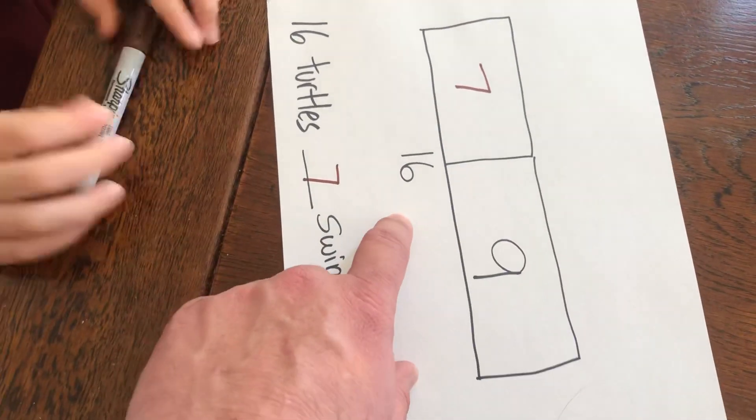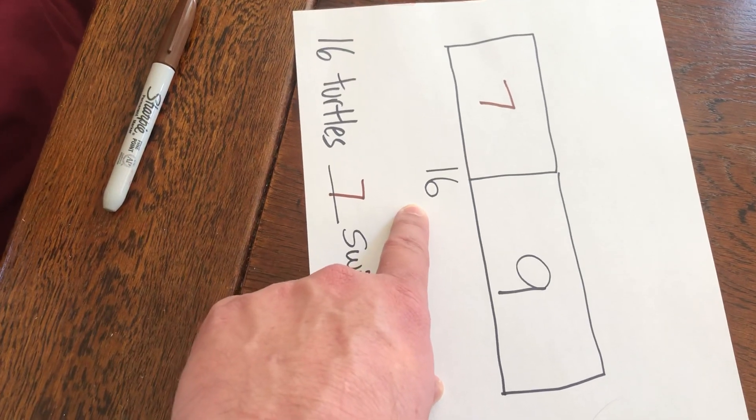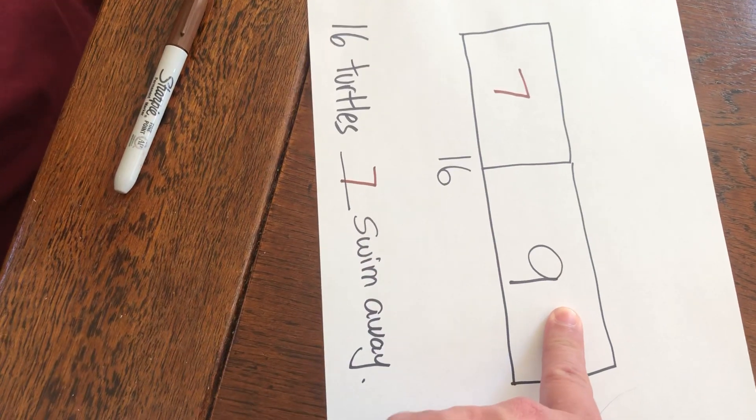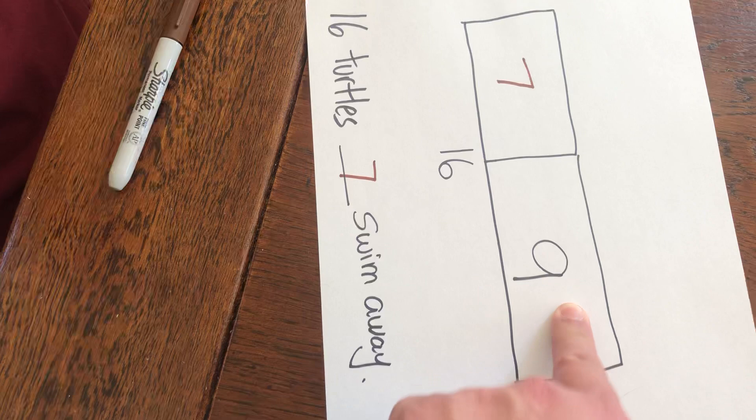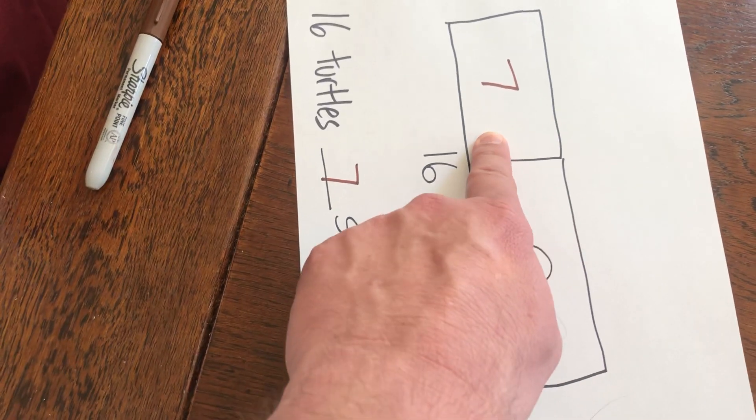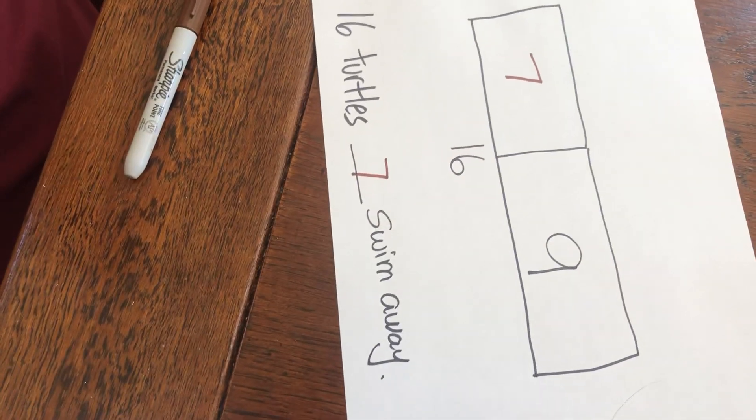There are 16 turtles and 7 of them swam away. So boys and girls, this is the whole, 16. That's the full amount. 9 is one part. That's how many stayed on the beach. And 7 is the other part. That's how many swam away.